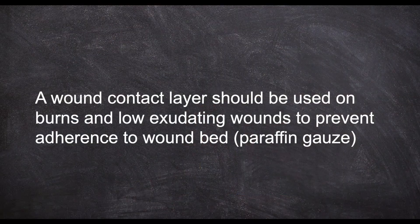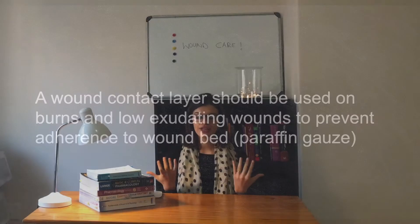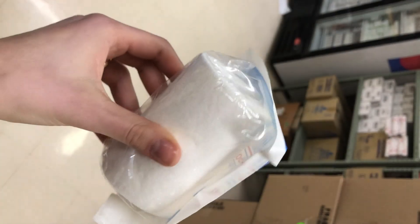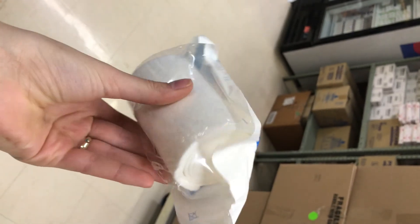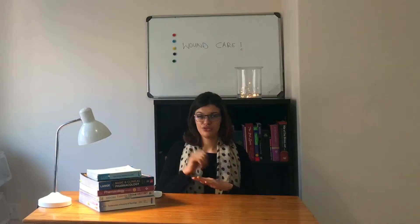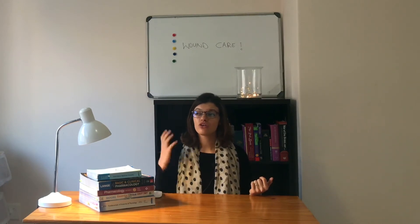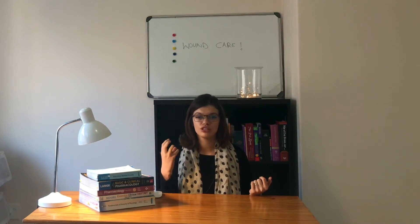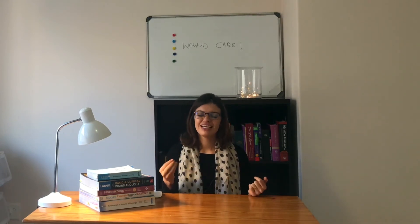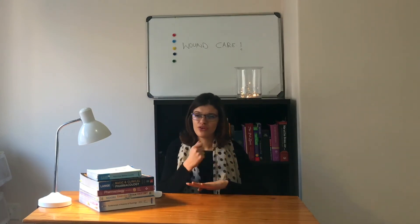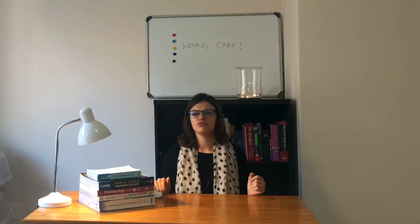As a precaution, a wound contact layer such as paraffin gauze should be used on burns and low-exudating wounds to prevent the dressing from adhering to the wound bed. The dressing has a cotton-like material that can cause extreme pain if small cotton fibers stick to the wound on removal, and can also cause secondary bacterial infection. It is always important to prevent any dressing from sticking to the wound and leaving fibers behind. An aseptic technique with sterile gloves is always recommended for application.